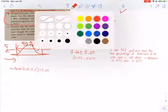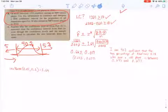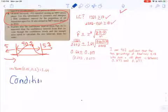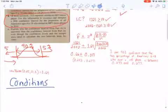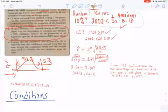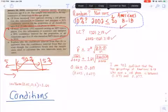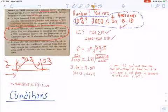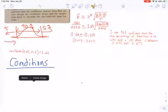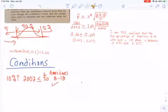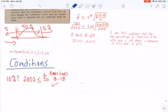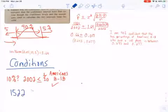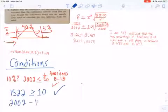Again, we're doing a 90% confidence interval. Let's check my conditions. Luckily, they surveyed the same people, so I can use the 10% condition from before because it's still 2,002 Americans that I surveyed, ages 8 to 18. Now, is 1,522 greater than or equal to 10? Certainly is. Is 2,002 minus 1,522 greater than or equal to 10? Certainly is. Large counts? Done.